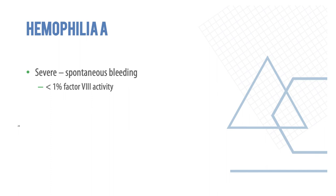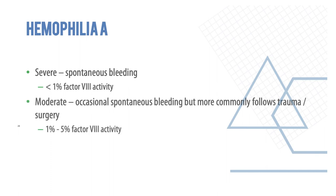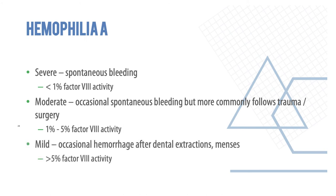Moderate hemophilia A involves occasional spontaneous bleeding but more commonly follows trauma or surgery, with factor 8 at 1–5%. Mild hemophilia A involves occasional hemorrhage after major procedures like dental extractions, with factor 8 greater than 5%.